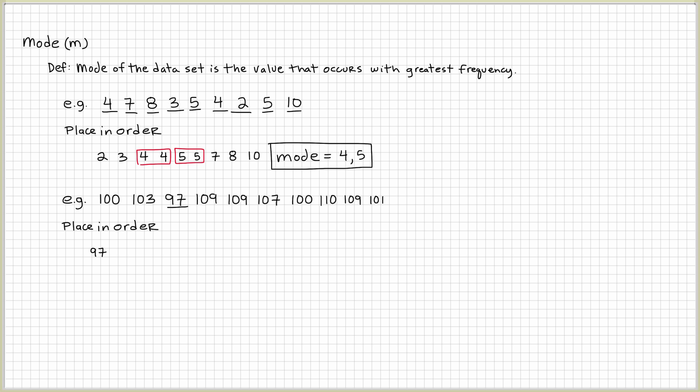So, again, we're going to put them in order. First number is 97, then there are two hundreds, 101, 103, 107, 109 three times, and 110.